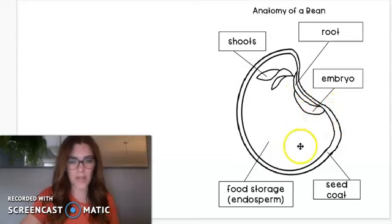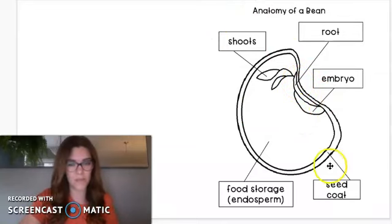We have the embryo here, that's the baby plant inside the seed. That is what the seed coat is protecting. We have the root, that's the first thing that's going to pop out and grow down from the seed. And then we have the shoots, that's the stem where the leaves are as well, that's going to grow up.